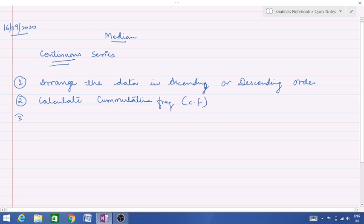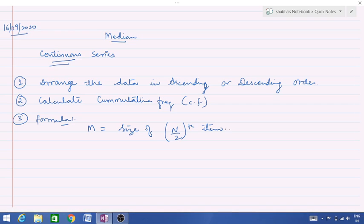After calculating this cumulative frequency, put the formula. Median is equal to size of n by 2th item. Now we have to calculate size of n plus 1 by 2th item. But in continuous we have to put two formulas. One is size of n by 2th item.